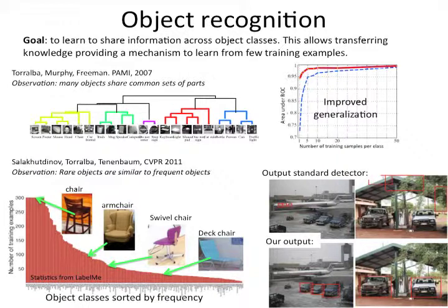We collected something like a hundred million images and we are building systems that can deal with all of these things. Now we are building another database that also contains a lot of data. One of the advantages of having so much data is that we can start building systems that recognize many different object classes, not just faces.